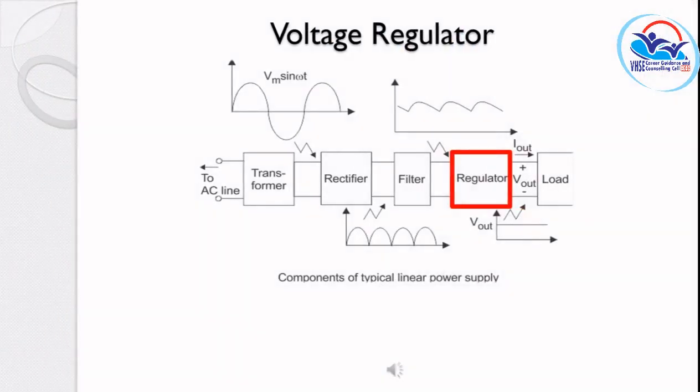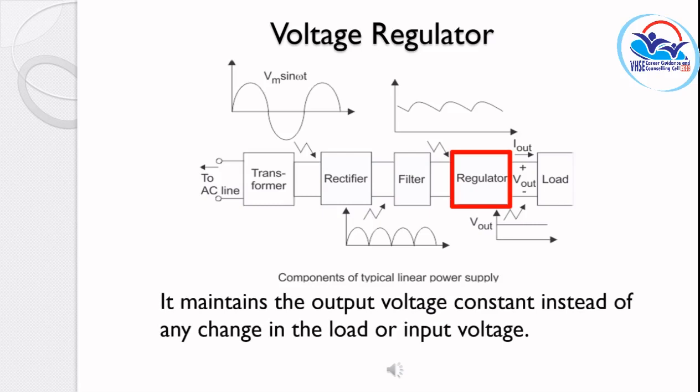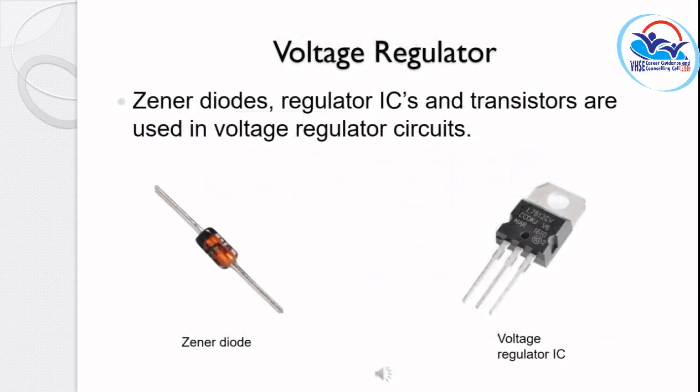The next section is the voltage regulator. It maintains a constant output voltage. The voltage regulator circuit can use a zener diode, an IC voltage regulator, or a transistor voltage regulator. This completes the regulated DC power supply.